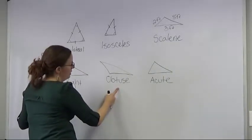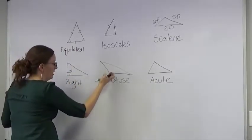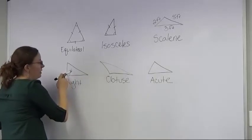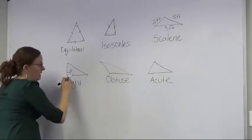An obtuse triangle has an angle in it that is larger than the 90 degrees, which means that you won't see the square in the corner, and just by looking at it you'll be able to tell that it is open more than a 90 degree angle.